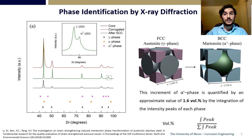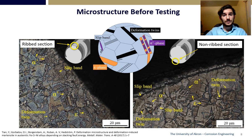To corroborate the XRD, an EBSD analysis was performed. Starting from the rib section, a dense layer of slip bands was seen. From these slip bands, epsilon and alpha-prime nucleated. This area had a higher degree of deformation from the rolling process. On the non-rib section, the density of these defects is even less; however, some minor deformation can still be seen.